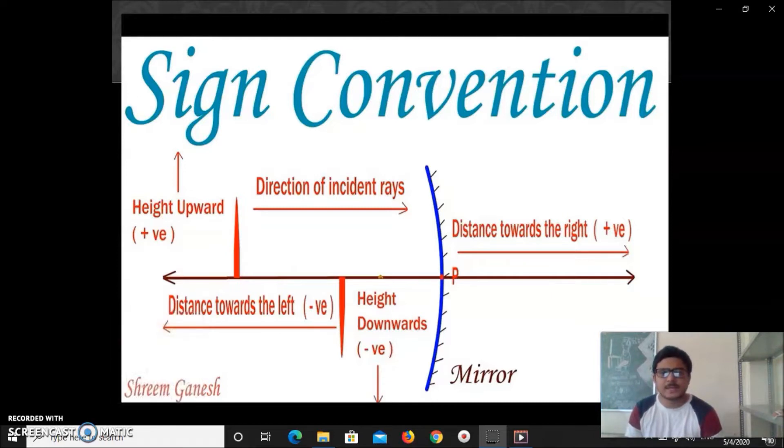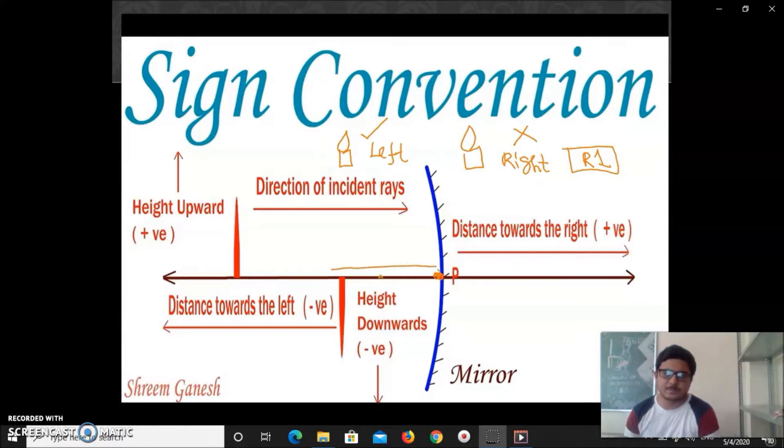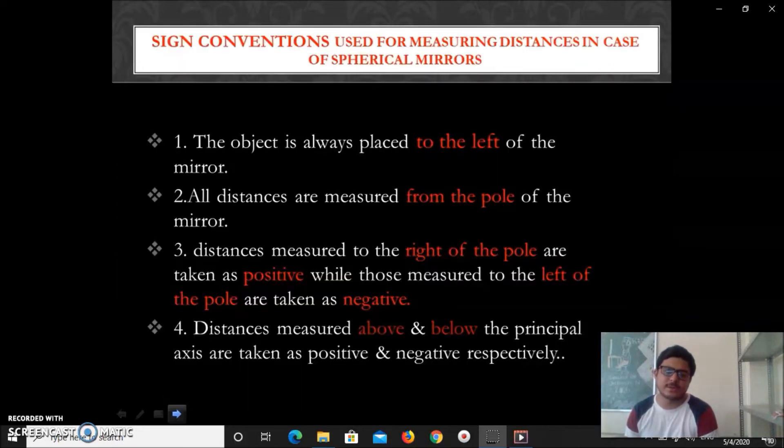Here already a picture is there with all the four rules. Object will be in left side, if you keep object in right side it is wrong. Rule two is all the distances should be measured from this particular point called pole. If you do calculation from reverse direction it will be wrong. Rule three is any distance in the right side then it will be positive distance. Any distance in the left side it will be considered as negative distance. And last rule, height upward positive, height downward negative.